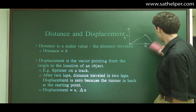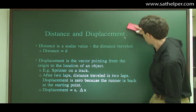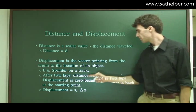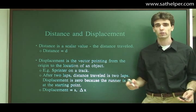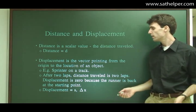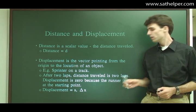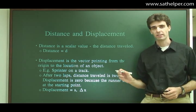So I have another example here. You can think about a sprinter on a track. If they're running in a track and field event, after doing two laps, the distance traveled is two laps. If the sprinter is running on a 400-meter track, then the distance is going to be 800 meters. However, the displacement is the change in position.